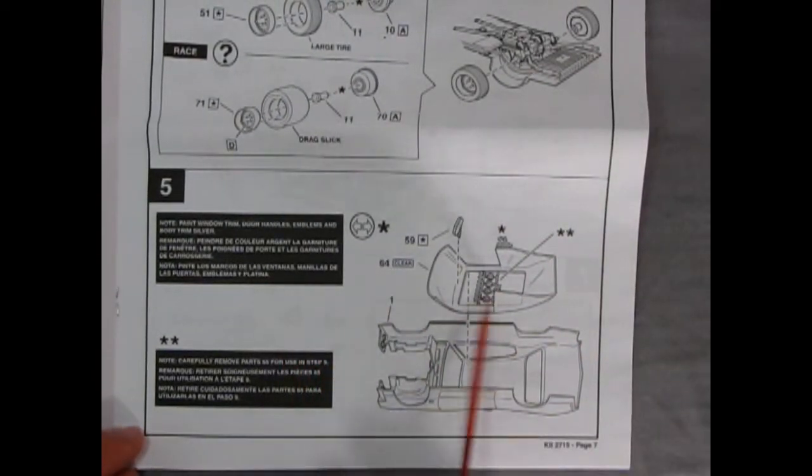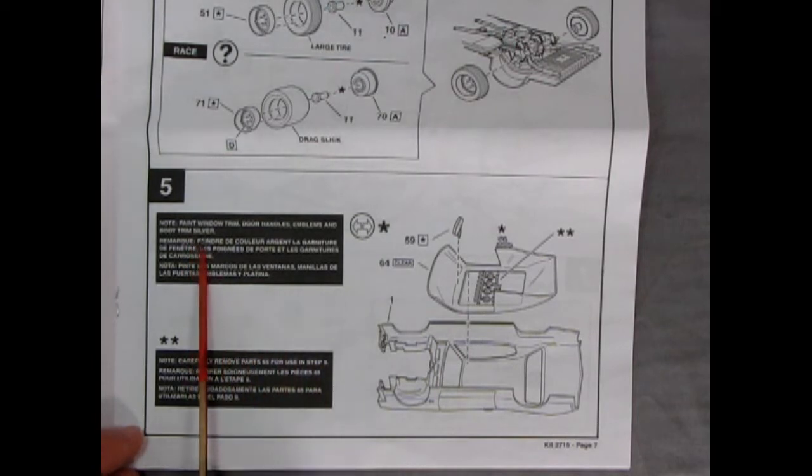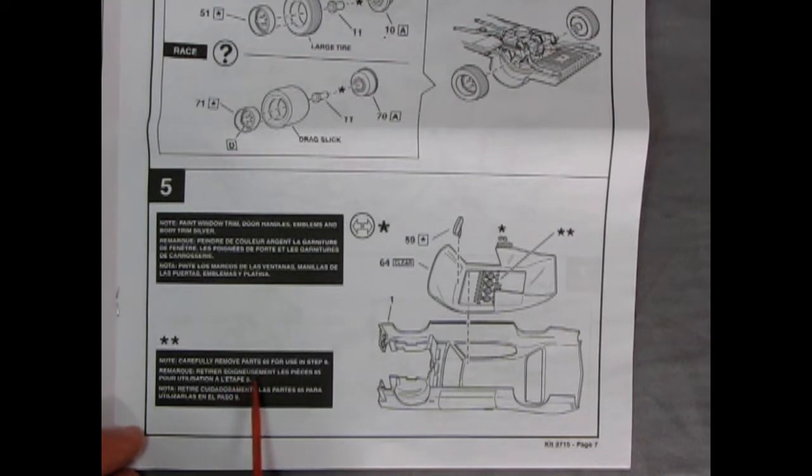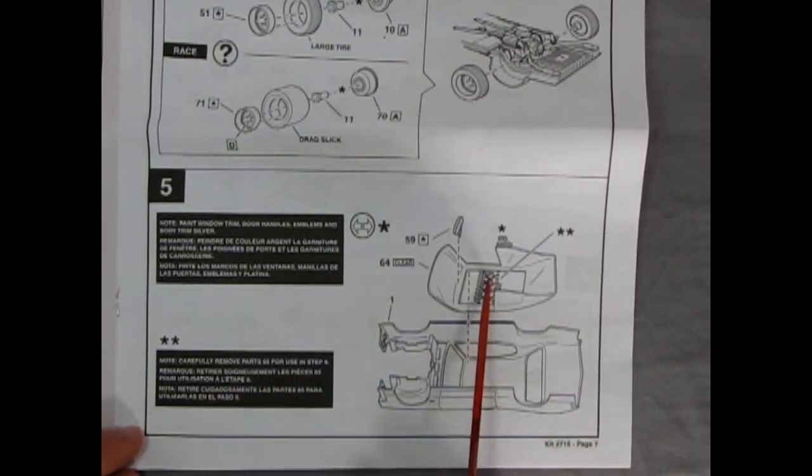Down here in panel five we have our windows. This is no paint, window trim, door handles, emblems, and body trim silver. Carefully remove parts 65 for use in step nine. So that's getting your little headlights out of here.